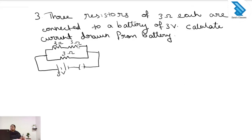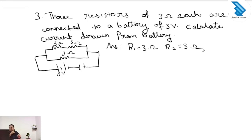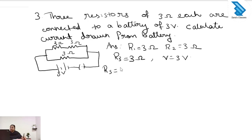So we can go to the next question. Three resistors of 3 ohm each are connected to a battery of 3 volt. Calculate the current drawn from the battery. R1 equals 3 ohm, R2 equals 3 ohm, and R3 equals 3 ohm, with voltage 3 volt. Looking at the diagram, R1 and R2 are in series.